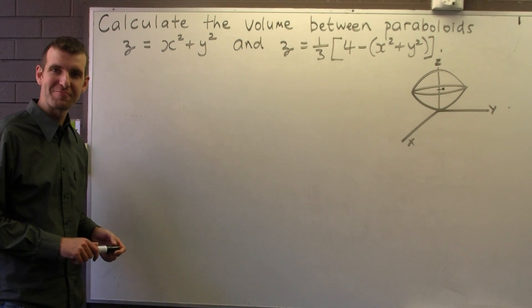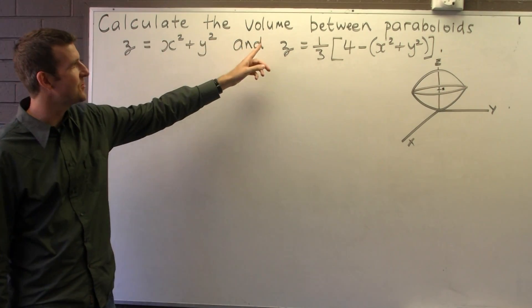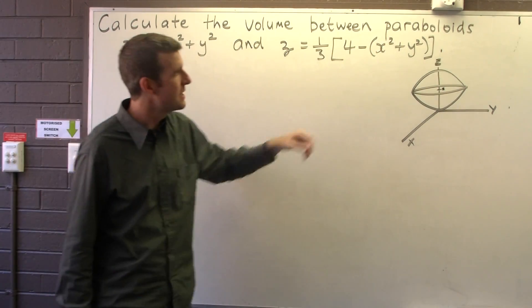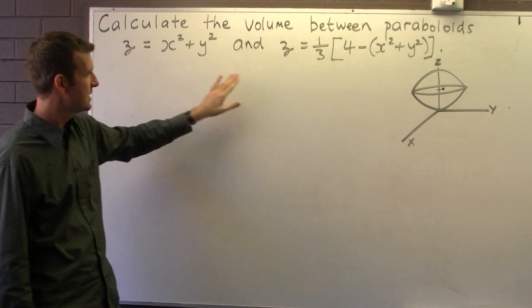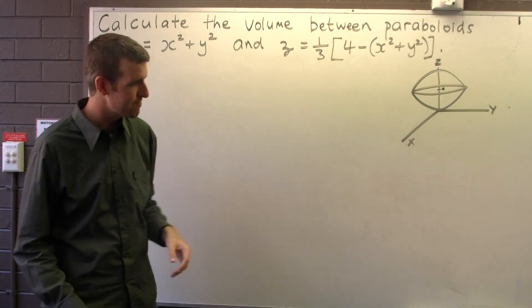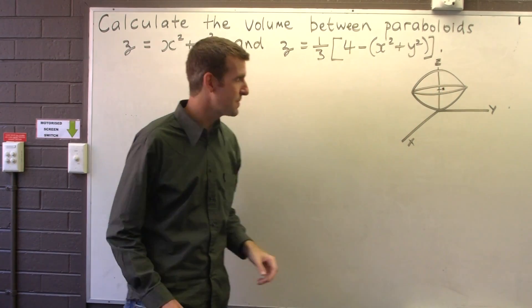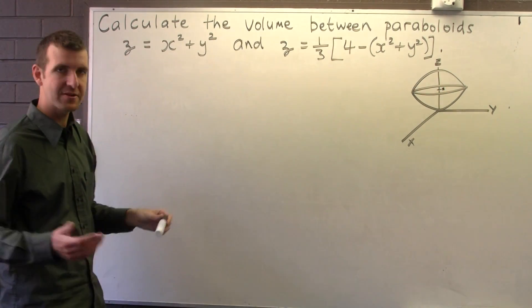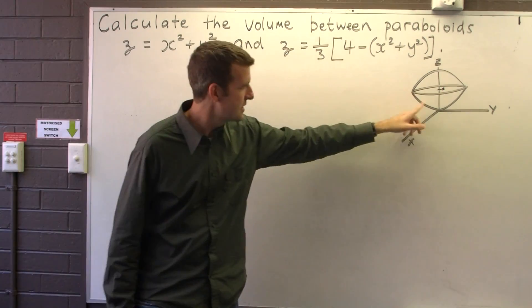Let's consider the following problem. We're asked to calculate the volume between two paraboloids. This is our lower paraboloid and this is our upper paraboloid. Over here in the picture I've drawn in the region of interest. How did I draw that? Well, first off I drew this bottom paraboloid.